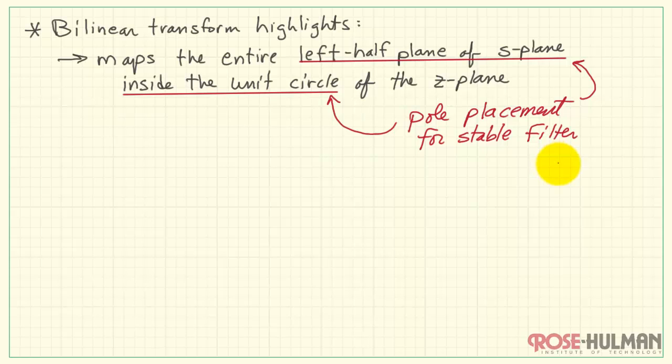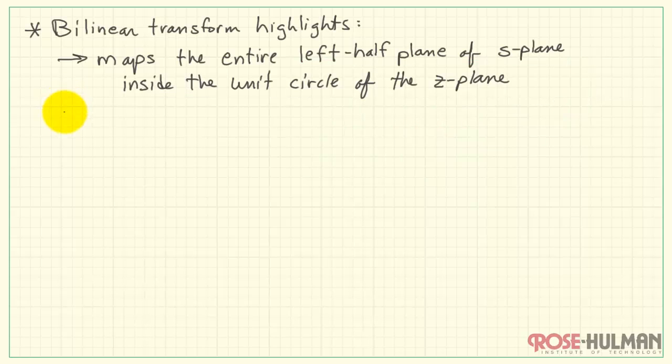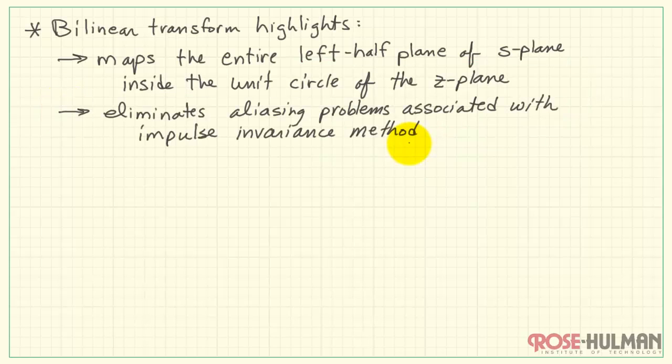Why is this significant? Well, the left half plane and the interior of the unit circle is where we place the poles when we want a stable filter. Now, a big advantage of the bilinear transform is that it eliminates the aliasing problems that are associated with the impulse invariance method.